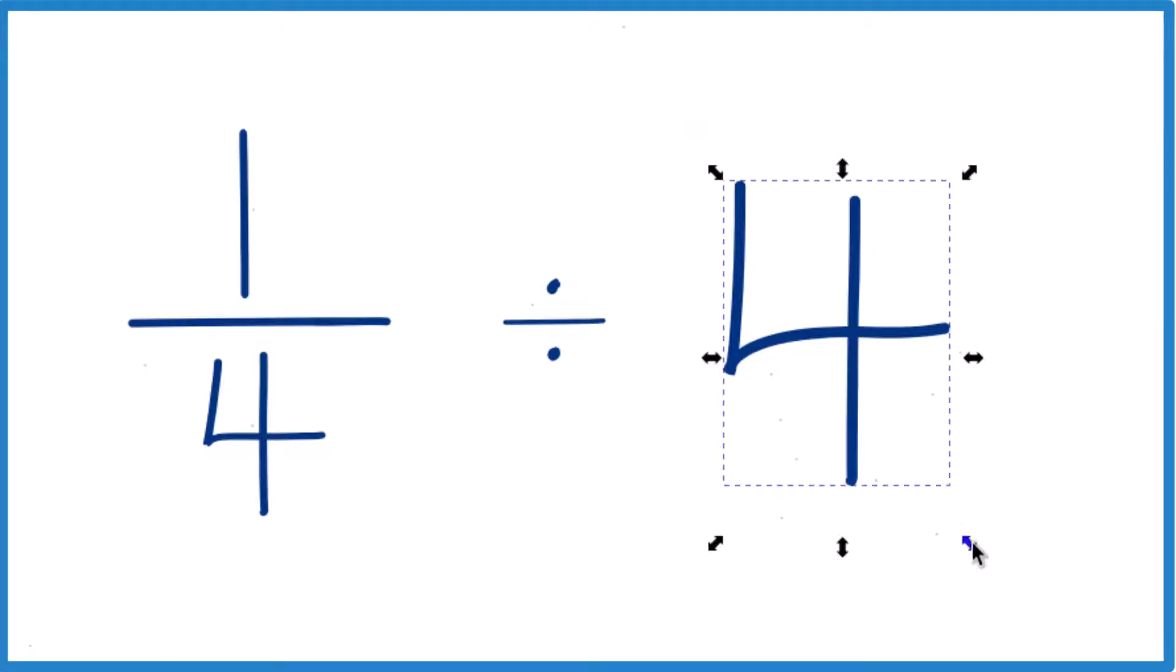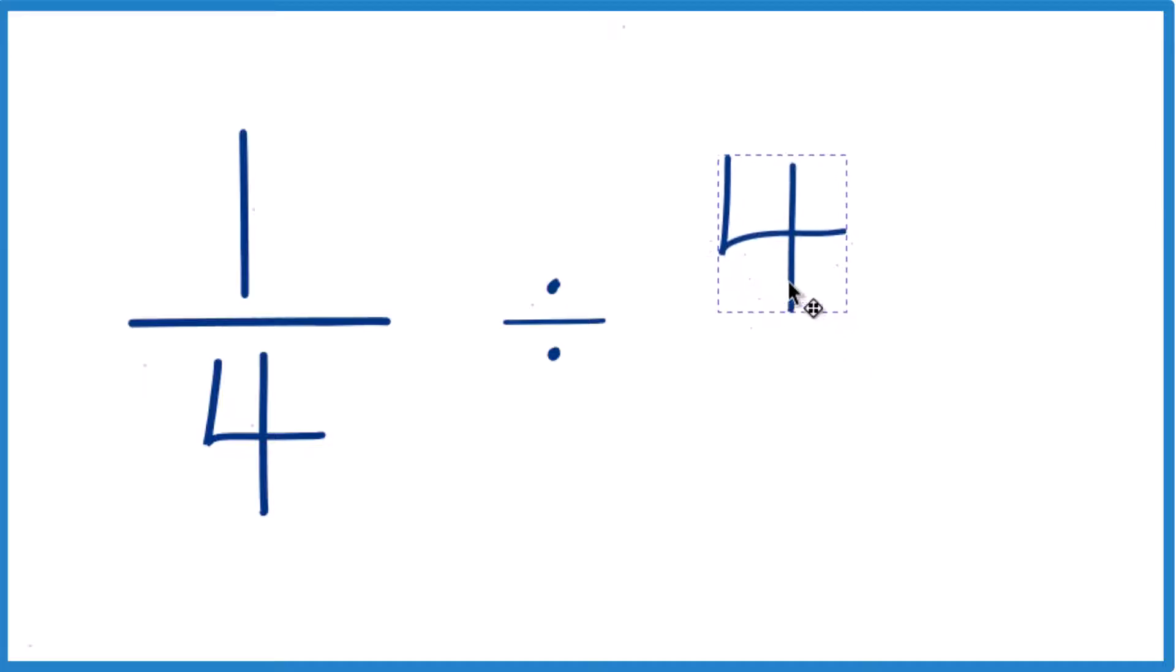Let's take the 4 here, and instead of 4, let's call this 4 over 1. It's still 4, we're just dividing by 1, but now things line up kind of nice.